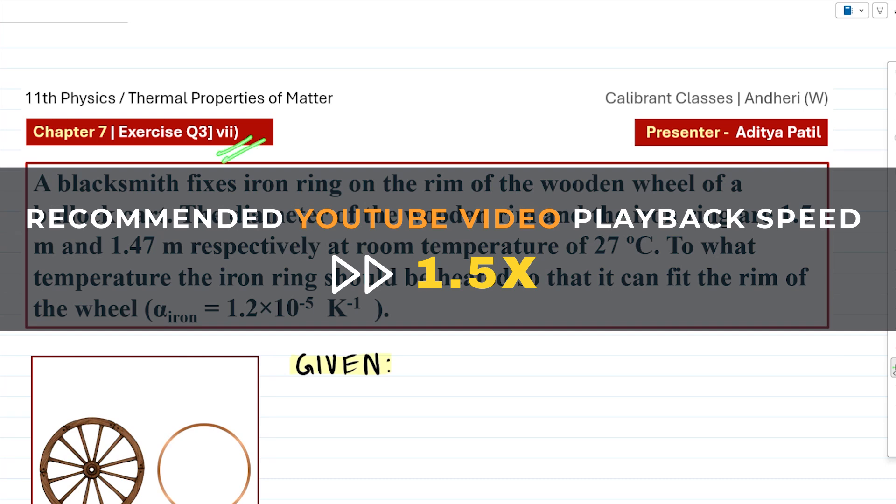Welcome students, we are discussing the 7th numerical from the exercise for the chapter Thermal Properties of Matter which is the 7th chapter of your 11th standard physics. So let's start.